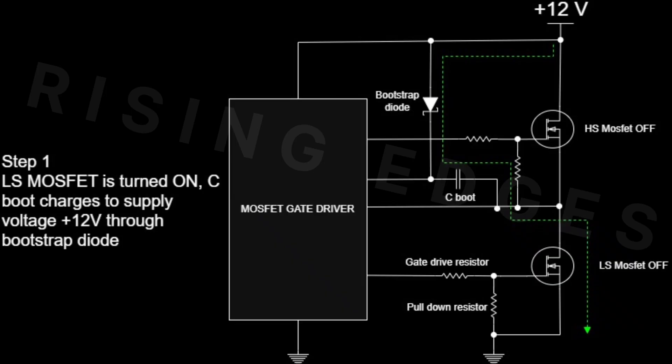In step 1, the low-side MOSFET is turned on and the bootstrap capacitor C-boot charges up slowly to the supply voltage through the bootstrap diode.